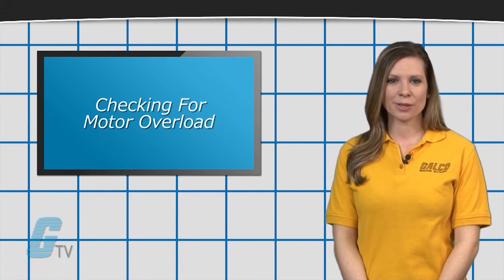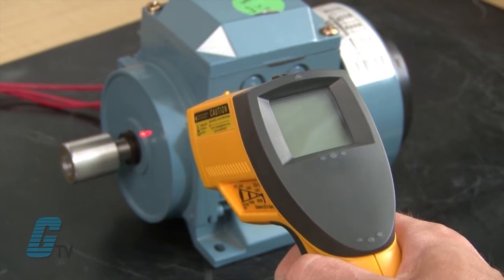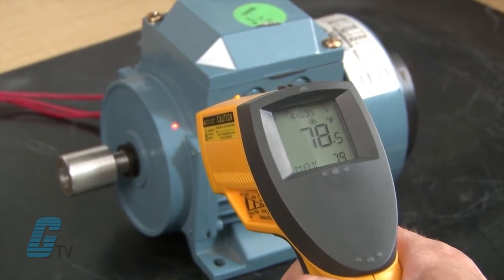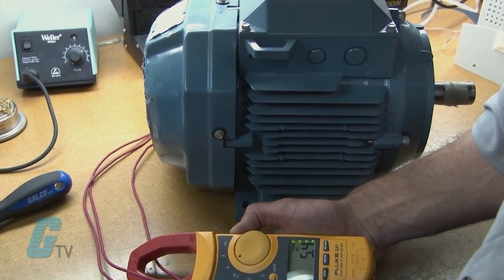A routine check to see if the motor is overheating is the first step in troubleshooting. An infrared thermometer can see if the motor has excess heat and a clamp meter can determine if there is excess current on the motor.